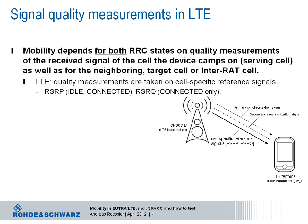Two measurements are taken for determining the quality of the received signal from the serving cell. Reference Signal Received Power, RSRP, is an average measurement over all reference signals, excluding noise and such. And then there is Reference Signal Received Quality, short RSRQ. This parameter sets the RSRP into a ratio with the RSSI — received signal strength indicator — which includes noise and interference. RSRP is measured in idle and connected mode, whereas RSRQ is only measured and reported in connected state.